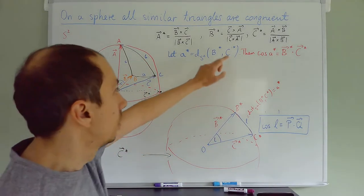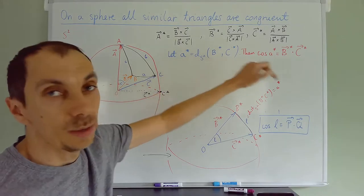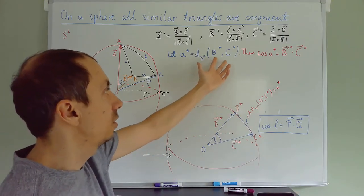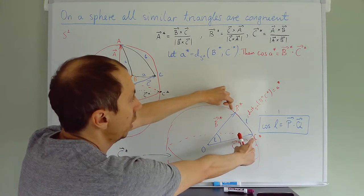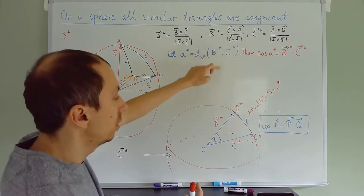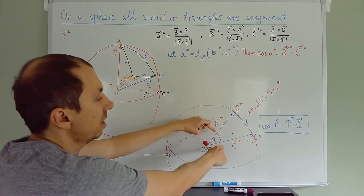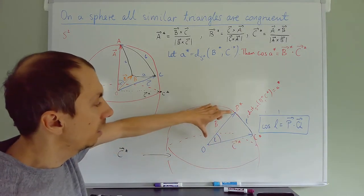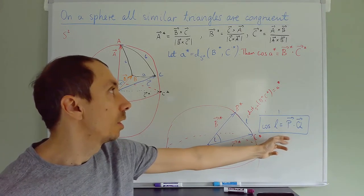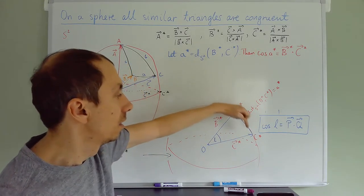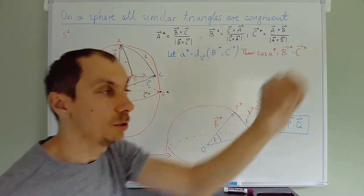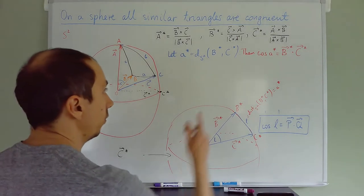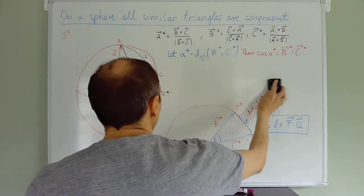These are just vertices of some spherical triangle — I'm not worried anymore that it's the dual triangle. What's the distance between the vertices? That's the arc length, which is the same as the central angle. If I connect the center of the sphere with these vertices and write them as vectors, then by that formula, cosine of that distance is just the dot product between these two vectors. So that's the beginning of our formula.